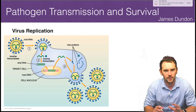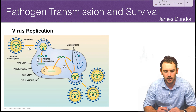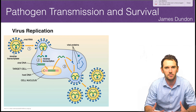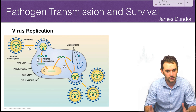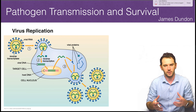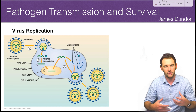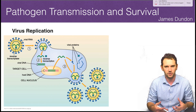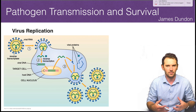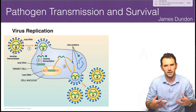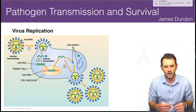The final thing we're going to talk about is that some pathogens can't replicate independently. Bacteria can — they can replicate independently, increase their numbers, reproduce, and that's really what happens when you get really sick: they increase to a certain level and then you start to see the symptoms.